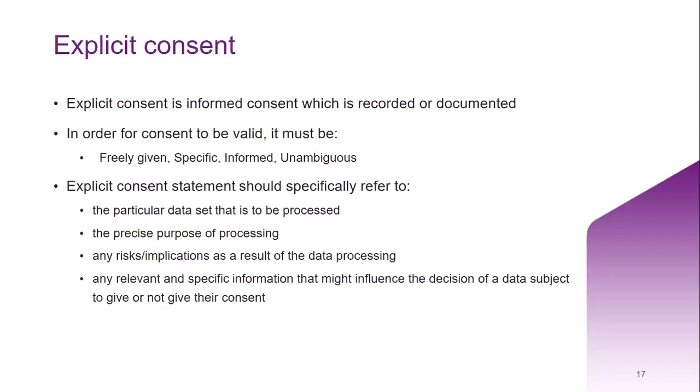Ordinary consent can be obtained verbally or in writing, however explicit consent should always be recorded or documented. There are conditions that if not adhered to can make consent invalid — for example, if you do not give genuine free choice, if there is a clear imbalance of power between researcher and individual, if the consent request was vague or unclear, if the researcher's organization was not specifically named, or if subjects were not informed about their rights to withdraw.